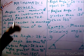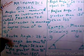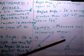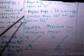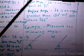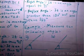Now the next one is a right angle. A right angle is an angle equal to 90 degrees.